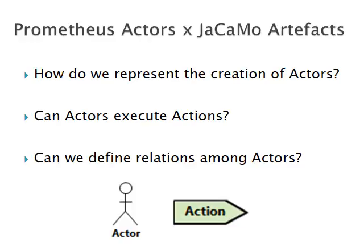We observed the following limitations and divergences in this diagram. In our case study, what is modeled as an actor in Prometheus is translated to artifacts in JaCaMo. However, there is no visual way to represent that an actor, an agent, or a scenario can instantiate an actor — none of these elements can connect directly with an actor. In Cartago, artifacts can be created by agents, other artifacts, or when the multi-agent system starts execution. We did not find any way to represent these things without having to change the metamodel of Prometheus or the implementation of PDT.